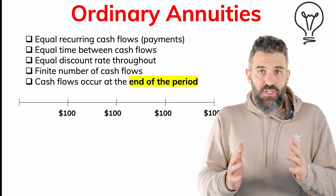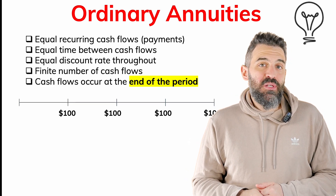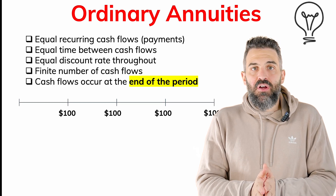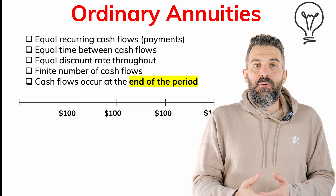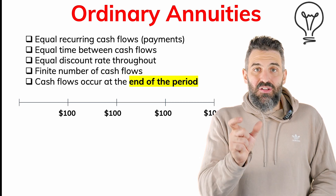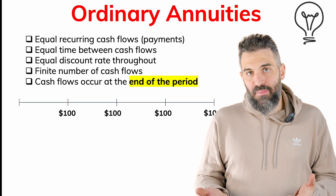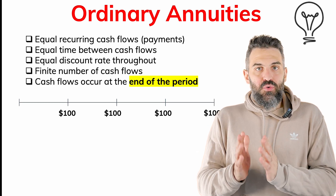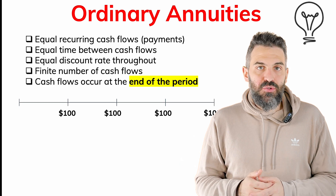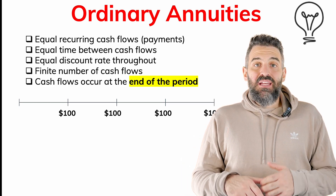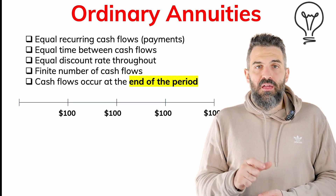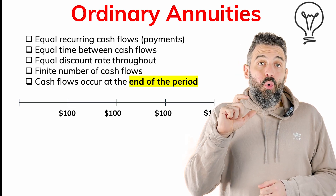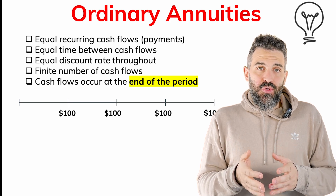The time between payments also has to be constant — for example, $100 every year must stay every year; you can't mix yearly and monthly intervals within one annuity. The interest rate or discount rate must stay constant throughout — for example, a 5% discount rate must remain at 5% for the entire length. Finally, an annuity does not go on forever; there are a finite number of payments, like $100 every year for four years.